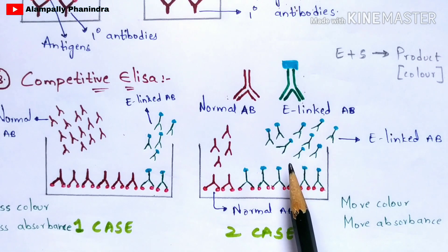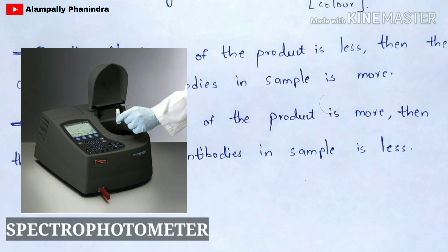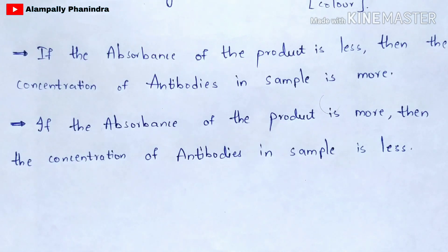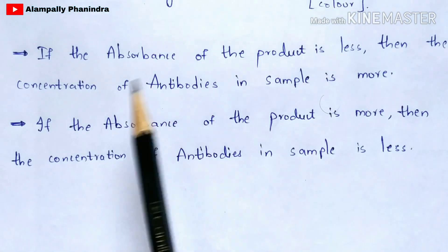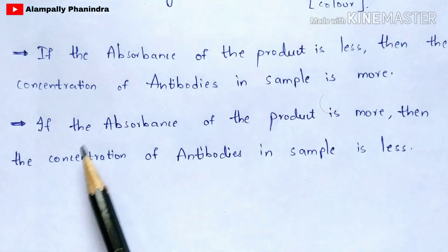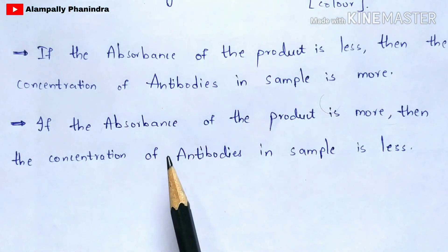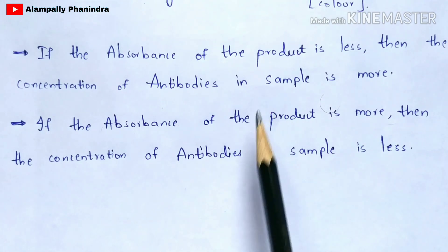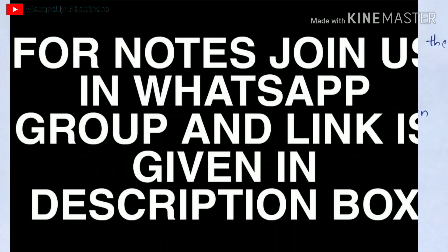We can conclude: if the absorbance of the product is less, then the concentration of antibodies in the sample is more. If the absorbance of the product is more, then the concentration of antibodies in the sample is less. Both of these statements are very important. This concludes the ELISA test.